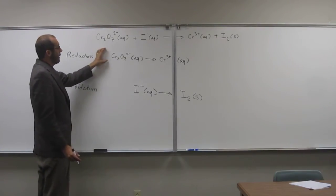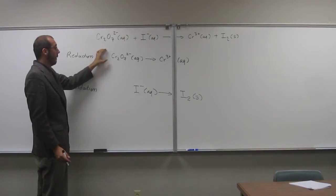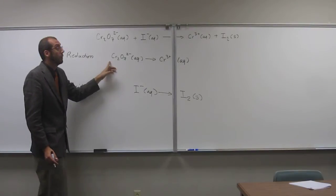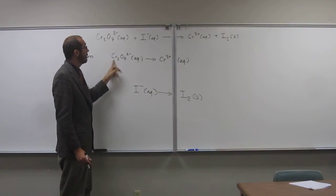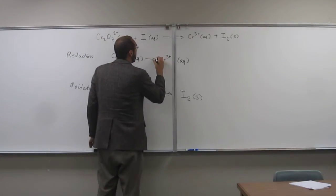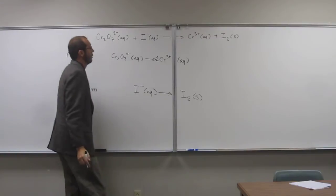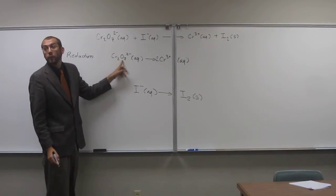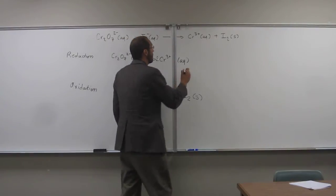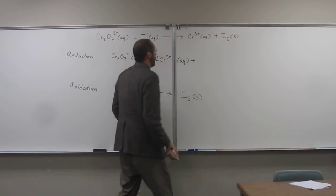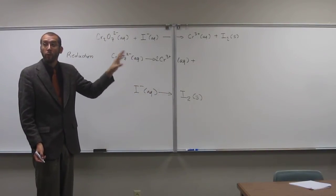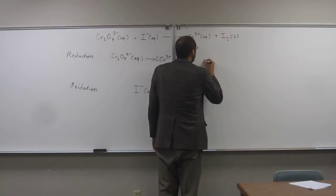So the next thing we want to do is balance the non-oxygen atoms. So here we see that we've got two chromiums and over here we've only got one, so we're going to have to put a two here. And here we've got all these oxygens, right? So O7. And here we've got zero oxygens. So whenever that happens, we're going to have to add the oxygens in the form of water.